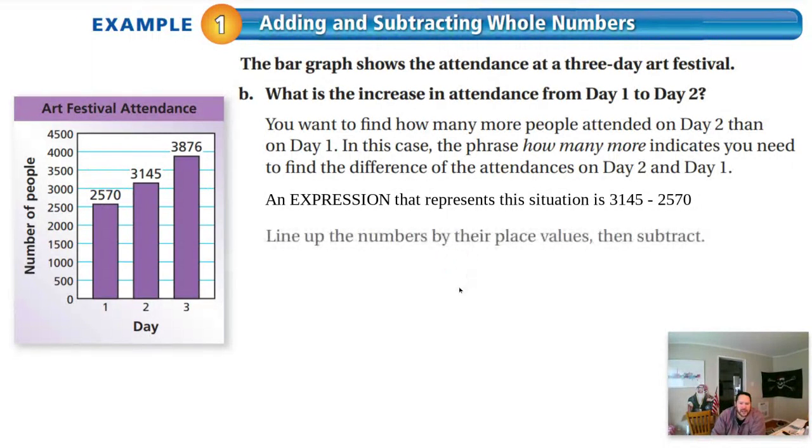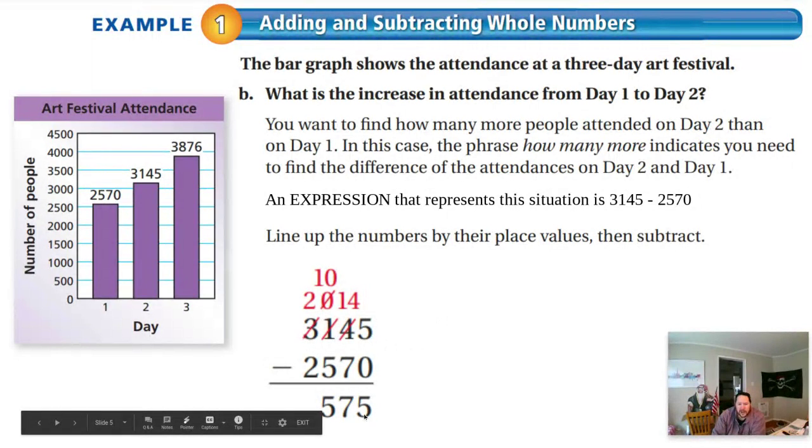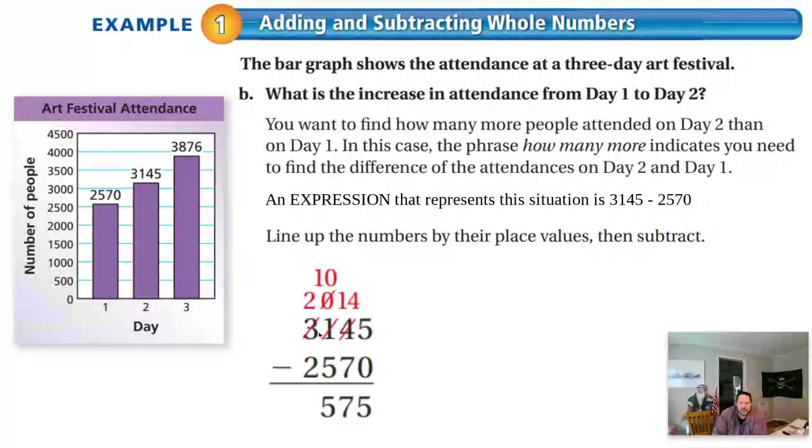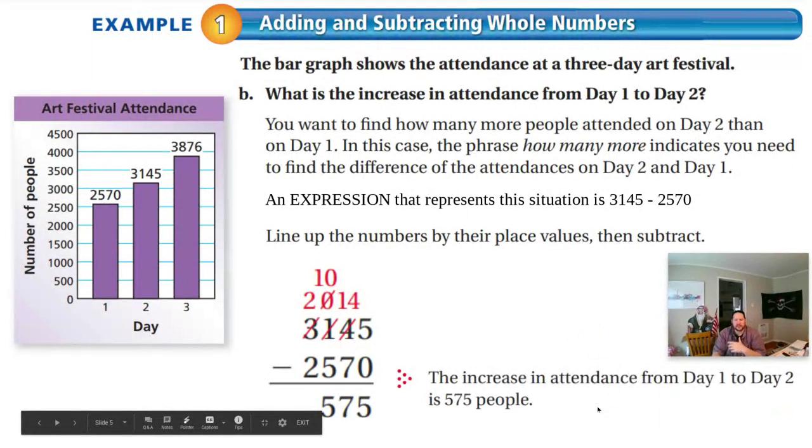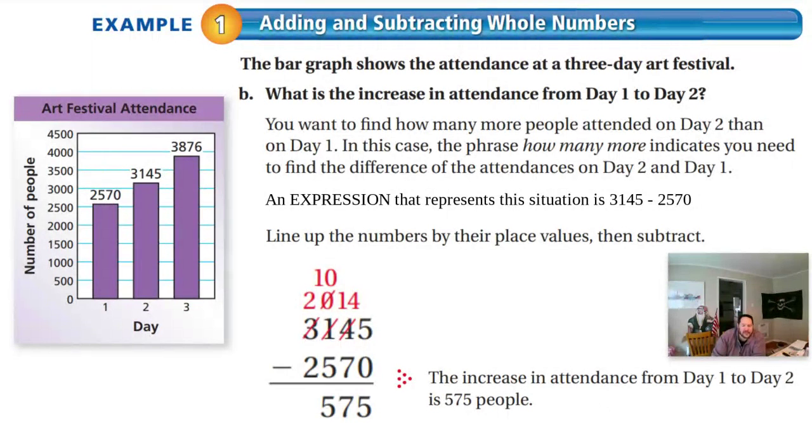When you subtract, you want to line up the numbers and then subtract. So, in this case, 5 minus 0 is just 5. No problem. 4 minus 7, though, you can't do. So, you're going to have to borrow. The way you borrow is you go over this 1 and you're borrowing 10 is basically what's happening. So, this 1 becomes a 0 and this 4 becomes a 14. Now, you can subtract. 14 minus 7 is 7. And we had 0 minus 5. You can't do 0 minus 5. So, you have to borrow from the 2. Hopefully, again, this is review. If you need some help borrowing to be able to subtract without a calculator, come see me during On Demand and I'll be happy to help you out. So, for this problem, the increase from day 1 to day 2 is 575 people.